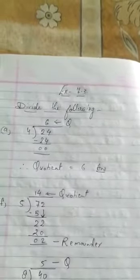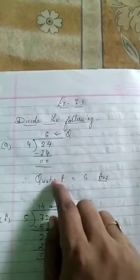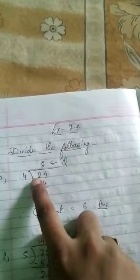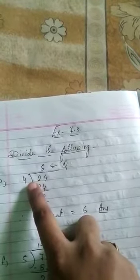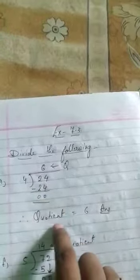Good morning students. Now we will come to exercise 7.3. Divide the following. We have to divide 24 by 4. We have to count the table of 4. 4 sixes are 24. It will cancel out. Therefore the quotient is 6.